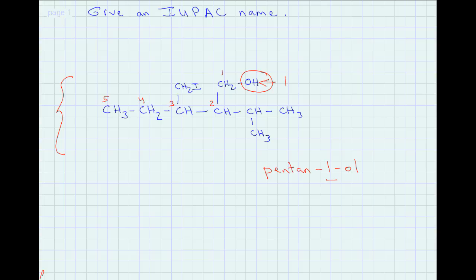Now we look at the other pieces of the molecule. We have a branch here — and from general chemistry you may remember this is an isopropyl group. We also have a small group on carbon three, which is a CH₂I group, called an iodomethyl group. So we have two substituents: an isopropyl group and an iodomethyl group.